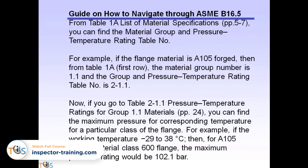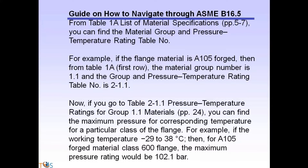Guide on how to navigate through ASME B16.5. From Table 1A, list of material specifications, pages 5 to 7, you can find the material group and pressure-temperature rating table number.